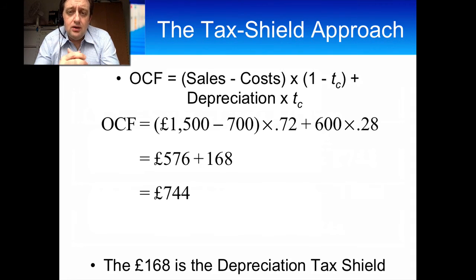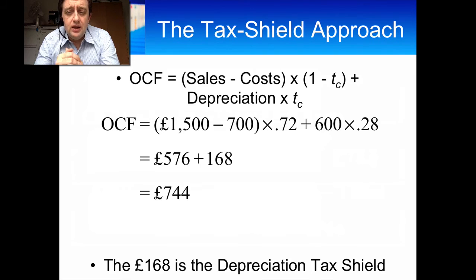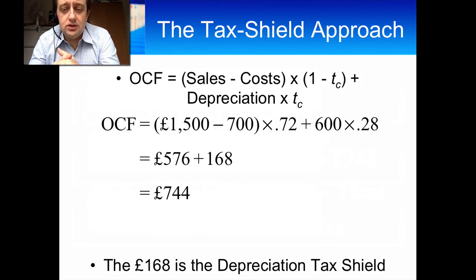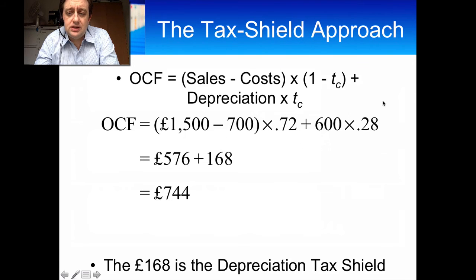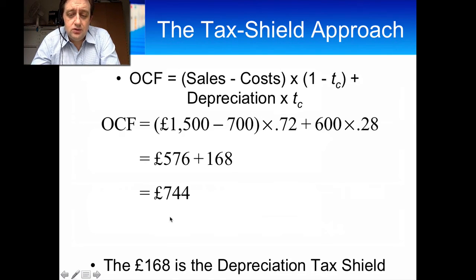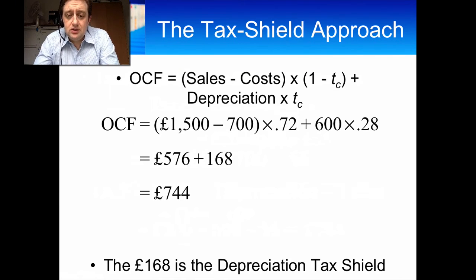So if we want to capture the after-tax impact of depreciation, we calculate the depreciation tax shield: it's 600 — the depreciation amount — multiplied by 0.28, the tax rate. That tells you how much your income is being reduced because of the depreciation. This part is the after-tax cash flow from operations, and this is the beneficial impact from depreciation. You add them together and you end up with 744. This amount is what is known as the depreciation tax shield, and it's used in a number of different applications in finance.